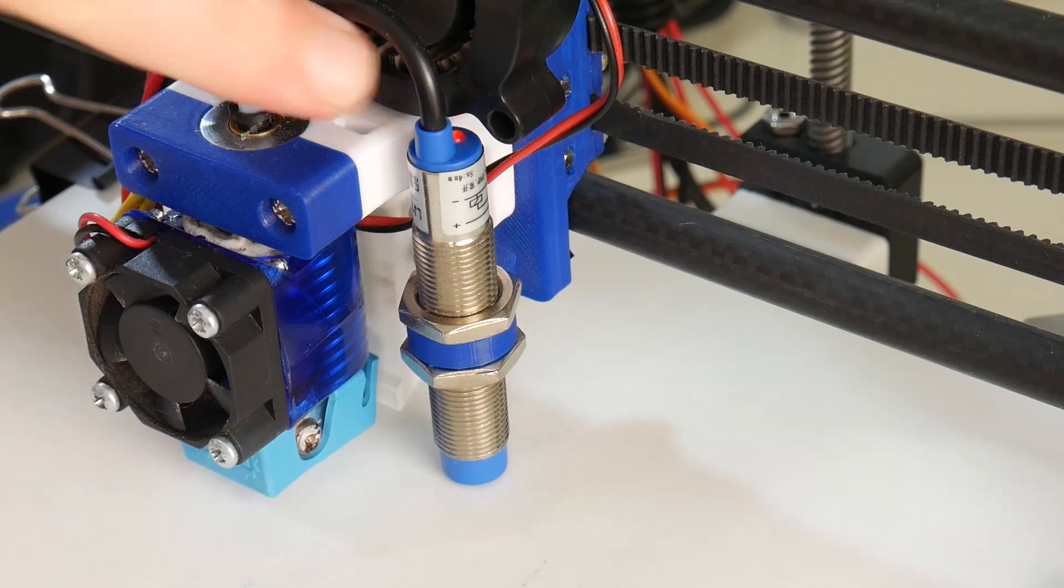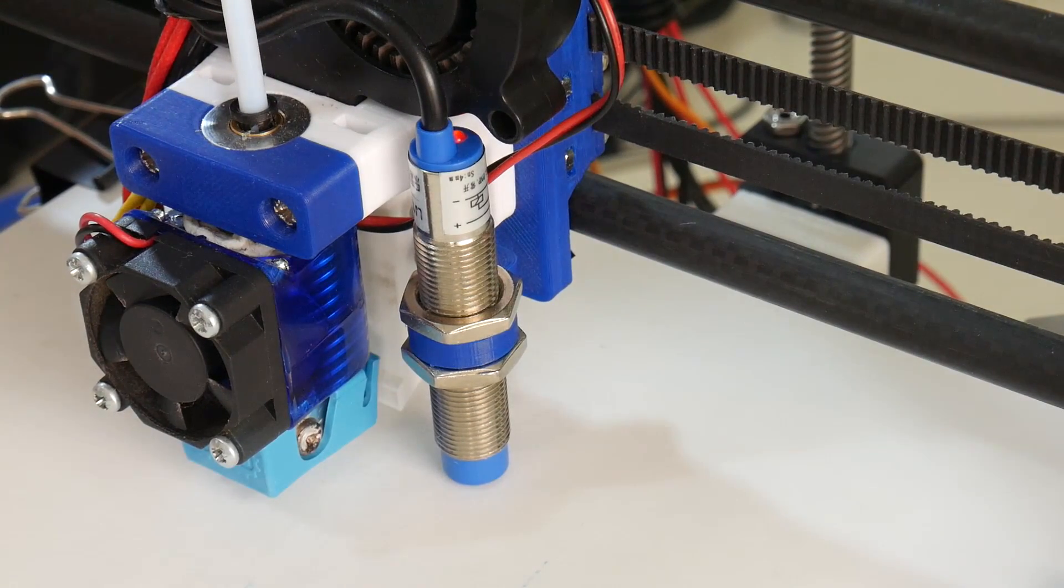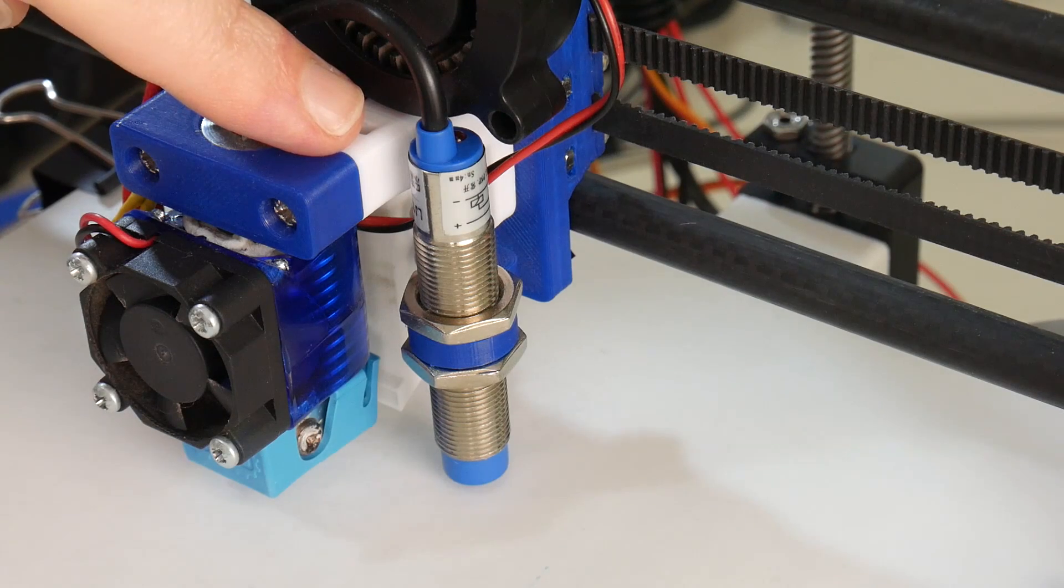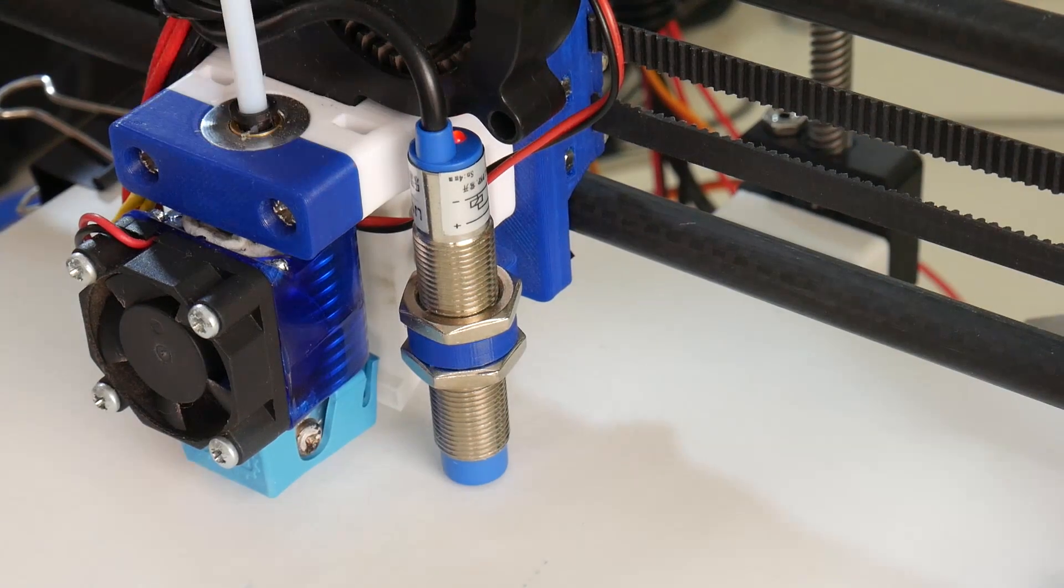You can see the light on the induction sensor, it has engaged. If I lower the print surface you'll see it's now turned off, lift it back up a bit, and then it turns on.